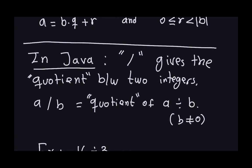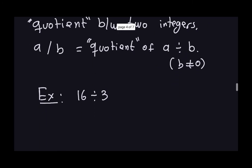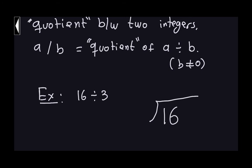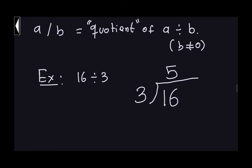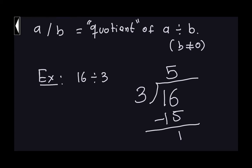Whenever you have integers a and b and you say a slash b, that gives you the quotient of a divided by b, as long as b is not equal to zero. A simple example: 16 divided by 3 — the quotient is 5. You multiply 5 by 3, get 15, subtract from 16, and get 1. So the quotient is 5 and the remainder is 1.